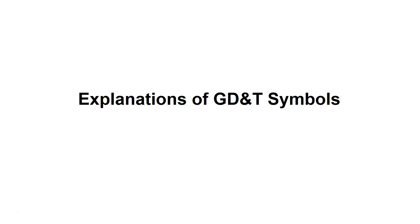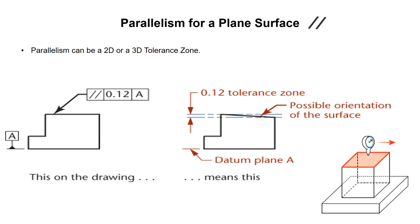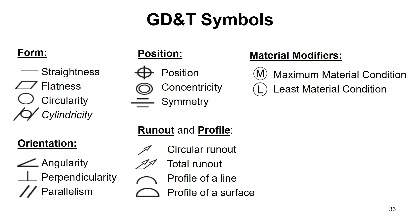Hello everyone. In this video we are going to explain the GD&T symbols, all of them except for the MMC and LMC. These are the symbols for form, position, orientation, runout, and profile. We're going to discuss all of these today, and go over them one by one to explain what they mean, how you show them, and how you can inspect them.